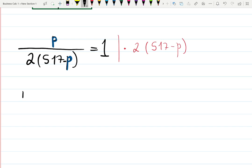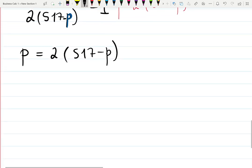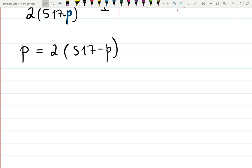I'll have p = 2(517 - p). Now I want to solve for p, but p is on both sides. Let's distribute: p = 2 times 517, which is 1034, minus 2p.